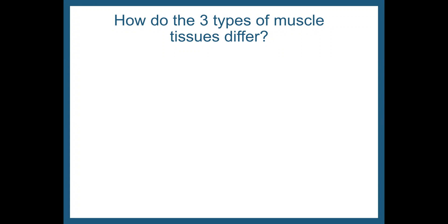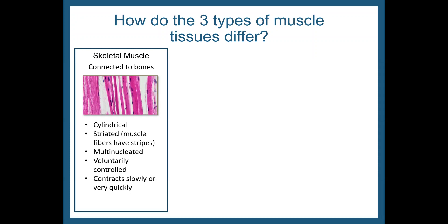There are three types of muscle tissue, and I want to talk about the differences between them. First, there's skeletal muscle. This is muscle that's connected to bones. It's cylindrical, shaped like a cylinder. It's striated — the muscle fibers look like stripes. They're multi-nucleated, so they have multiple nuclei. These are voluntarily controlled — you have control over them — and they contract slowly or even very quickly.